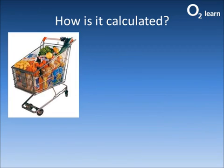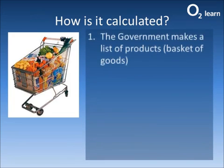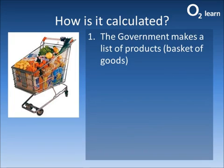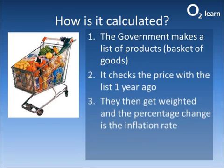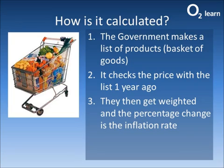How is it calculated? Let's have a look at how inflation is calculated. The government makes a list of products — a basket of goods. It then checks the price against the list from one year ago. They then get weighted and the percentage change is the inflation rate. It's really important that the government select the right products that are important to people — yes, it can be manipulated.